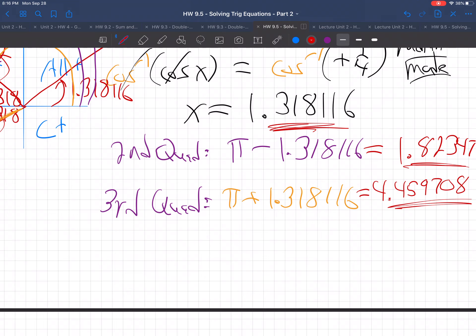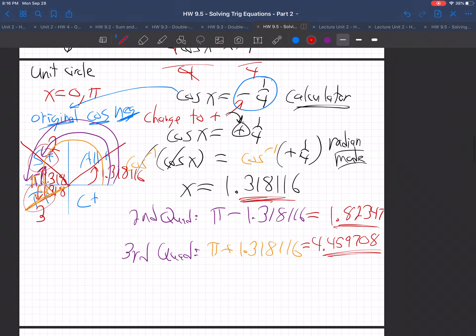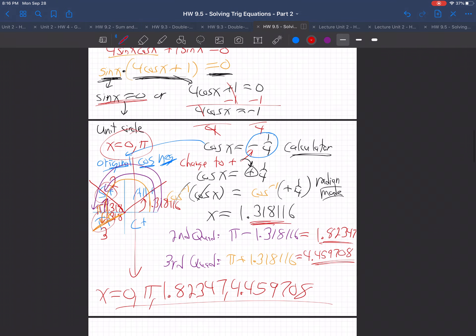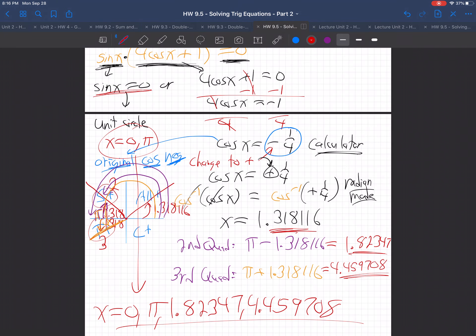So, there's the other two answers that we get. So, putting it all together. What are the answers? Zero and pi. The two we got from that side, they're still valid answers. And the 1.82347, 4.459708. There they are. The four answers to this question. So, there it is. That's not an easy question.